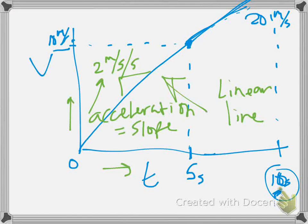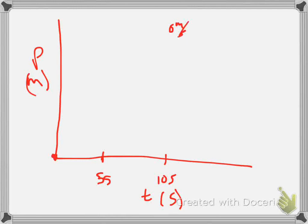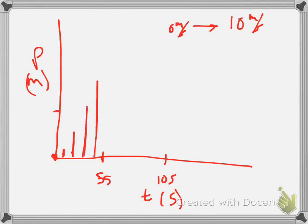Now let's see what this looks like on a position versus time graph. Position is in meters on the y-axis, time in seconds on the x-axis - with five seconds and ten seconds marked. The car starts at the origin at zero. After one second he's traveled some distance, after two seconds a bit more, three seconds more, four seconds more, and after five seconds he's traveled this much total distance.